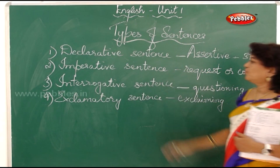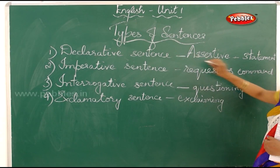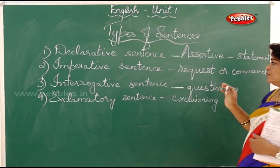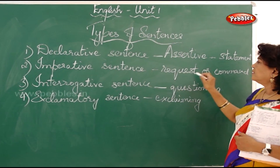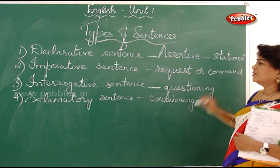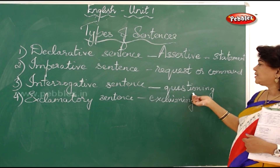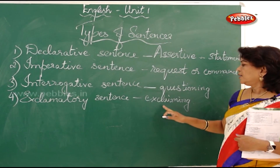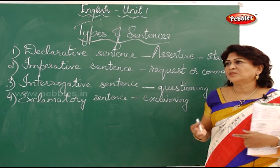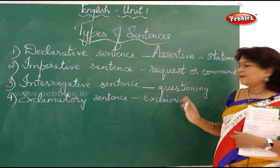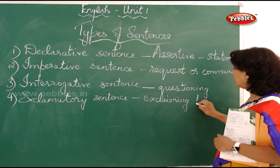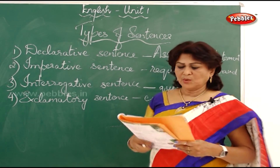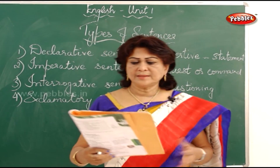To recap the four kinds of sentences: a declarative sentence is a statement; an imperative sentence is either a request or a command; an interrogative sentence is a questioning sentence that ends with a question mark; an exclamatory sentence shows some surprise or grief and ends with an exclamatory mark. Now with that we will go on to do the sentences given here.